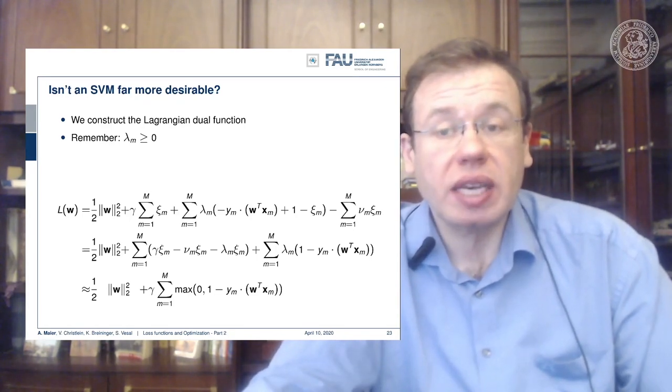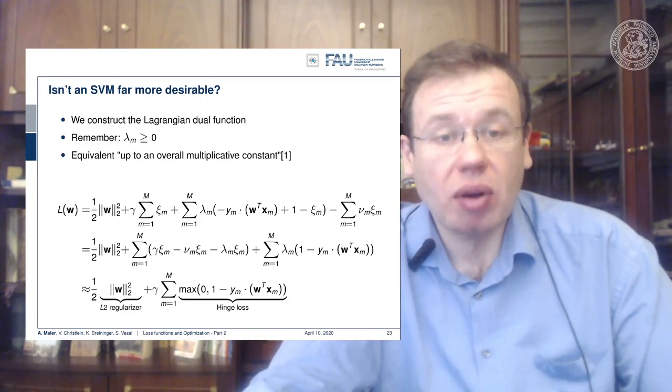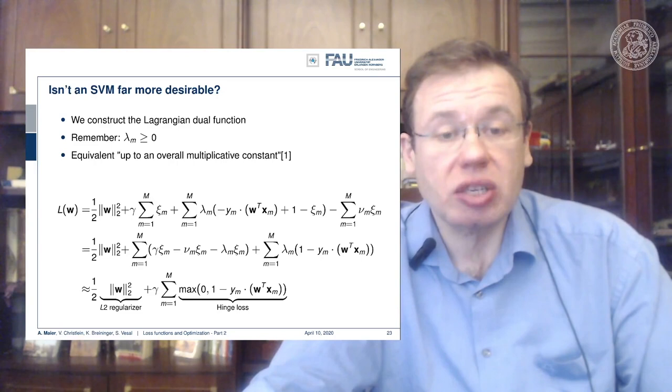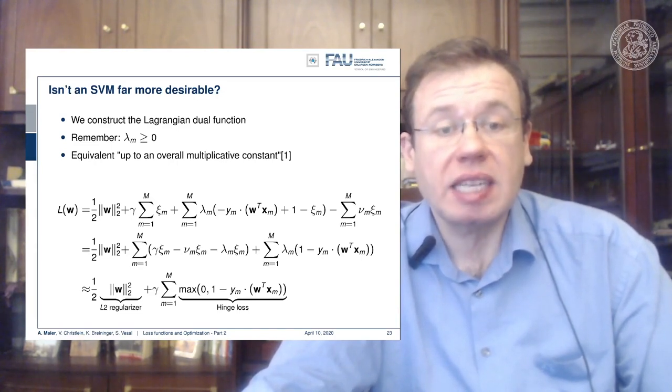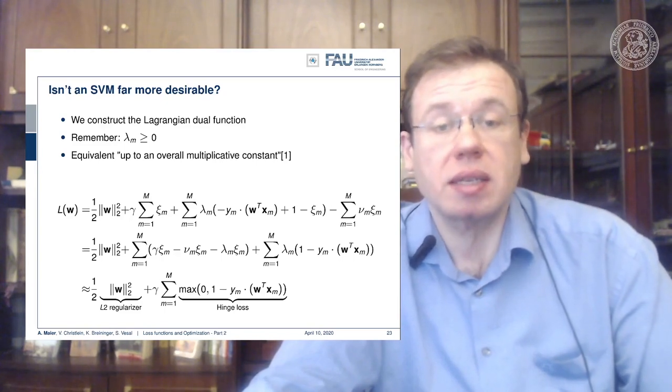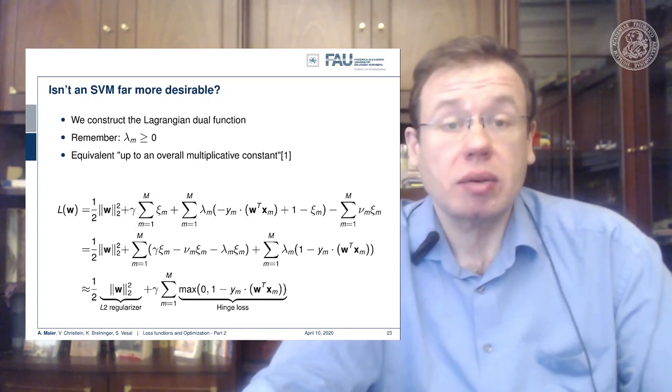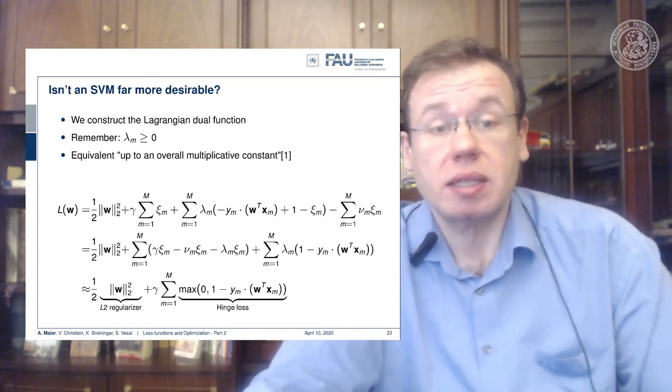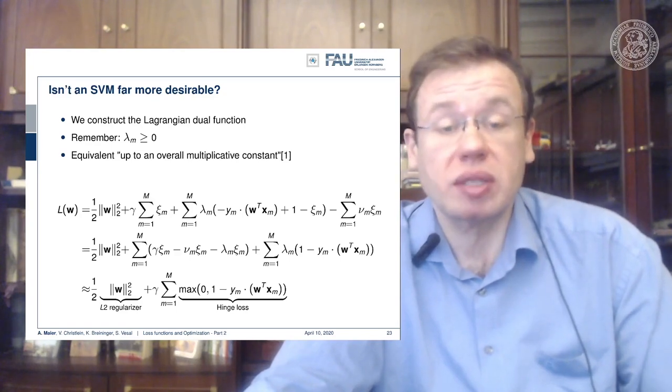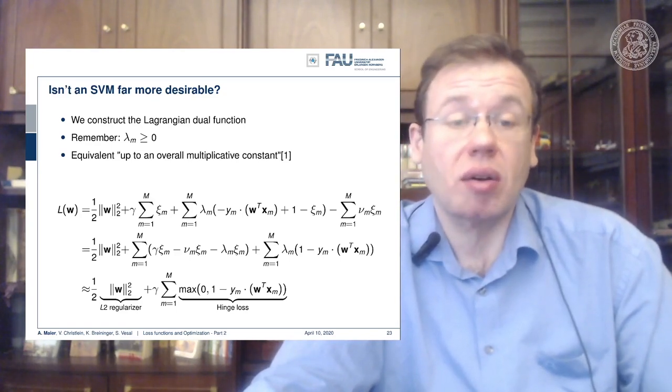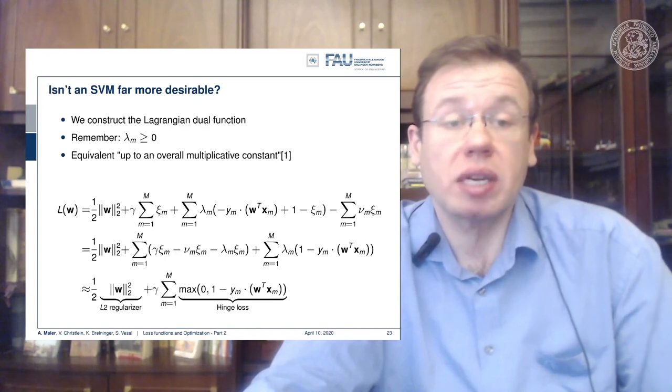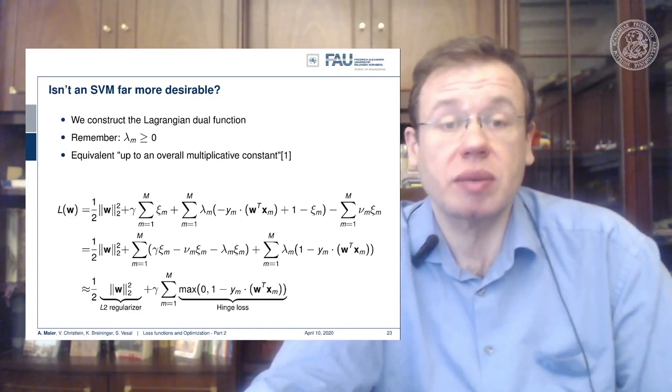So you can show that the support vector machine and the hinge loss formulation with those constraints, they are equivalent up to an overall multiplicative constant, as you can read in reference 1. So if people say, oh, you can't do deep learning and take an SVM instead, well, if you choose the right loss function, you can also integrate, incorporate a support vector machine into your deep learning framework. That's actually a quite nice observation.